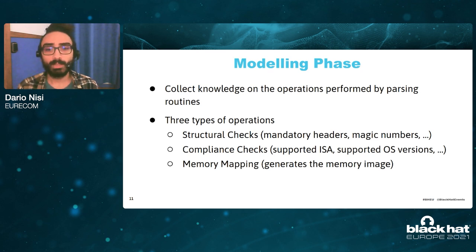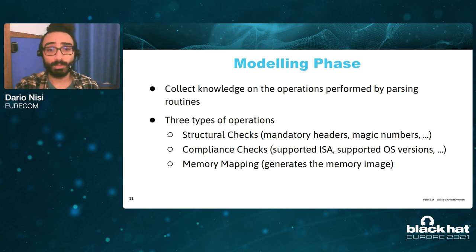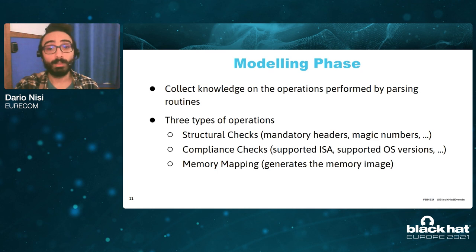Then we have compliance checks, in which the software validates the program from an operational point of view. For example, the operating system may want to check that the instruction set architecture of the program matches the one of the machine onto which it's about to run. The third type of operation is memory mapping, in which either the program is loaded in memory, as in the case of the Windows program loader, or the tool creates an abstract representation of how the program looks like when it's loaded in memory, such as in the case of reverse engineering tools.